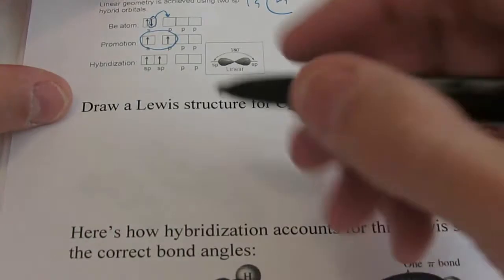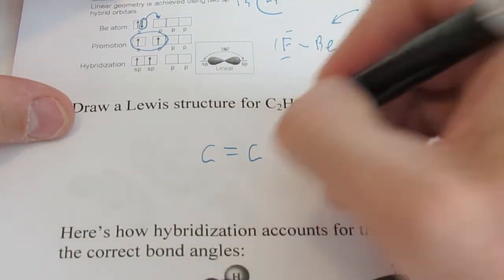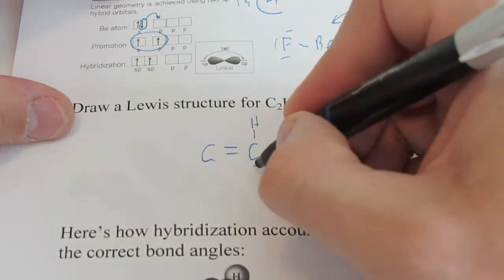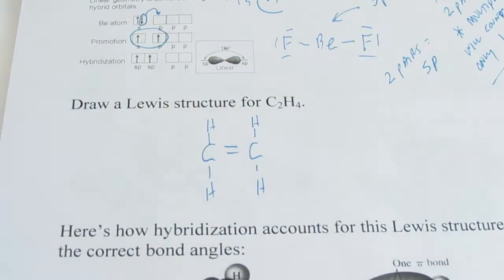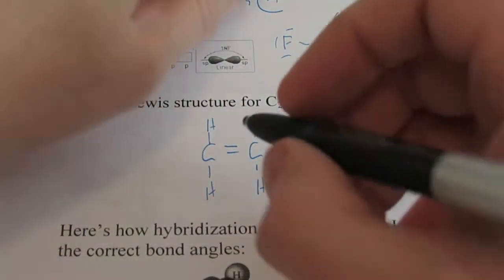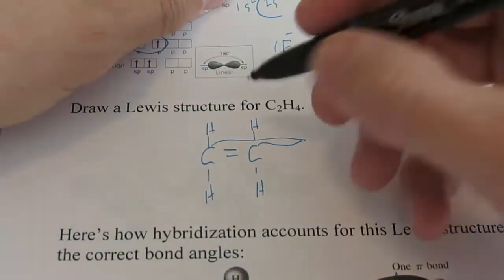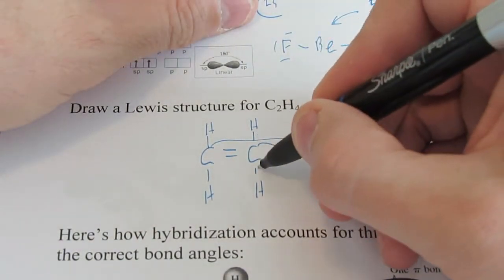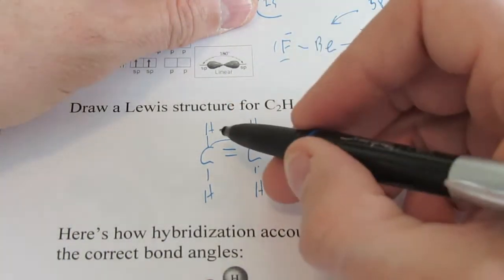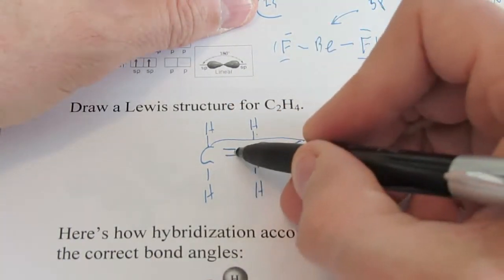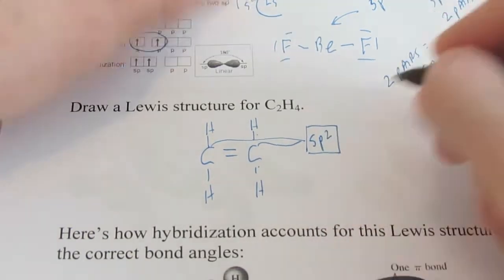Let me draw the Lewis structure for C2H4 quite quickly, and you're going to see that there is a multiple bond there. So that is C2H4. Now, if I asked you what the hybridization on these carbon atoms was, you would count pairs of electrons around them. We'd say one, two, and there's a multiple bond — we're only going to count that as one pair. Three. And this carbon atom is also one, two, three. So we'd say that would be SP2 hybridization.